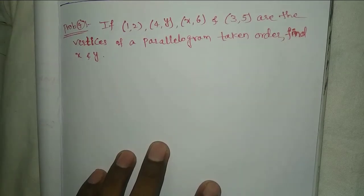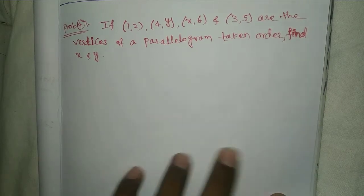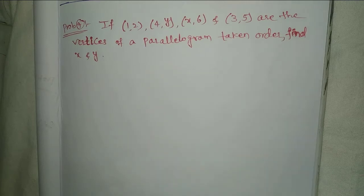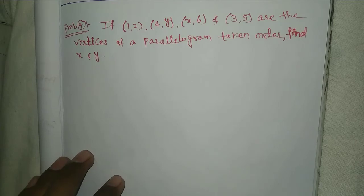Welcome to Rajesh Lekaloo. Today our topic is 10th class math, coordinate geometry, exercise 7.2, problem 4. If (1,2), (4,y), (x,6), and (3,5) are the vertices of a parallelogram taken in order, find x and y.